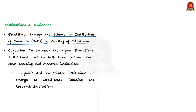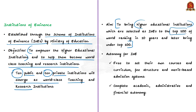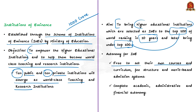The Institutions of Eminence scheme was launched to help higher educational institutions become world-class teaching and research institutions. Under this scheme, 10 public and 10 private institutions are identified to emerge as world-class institutions. The aim is to bring selected institutions to the top 500 of world rankings within 10 years, and thereafter to the top 100. Institutions of eminence are eligible for a government grant of Rs 1,000 crore. Once an institution gets the IoE tag, it will not be subject to UGC inspections and is free to set its own courses, curriculum, fee structure and merit-based admission systems, with complete academic, administrative and financial autonomy.